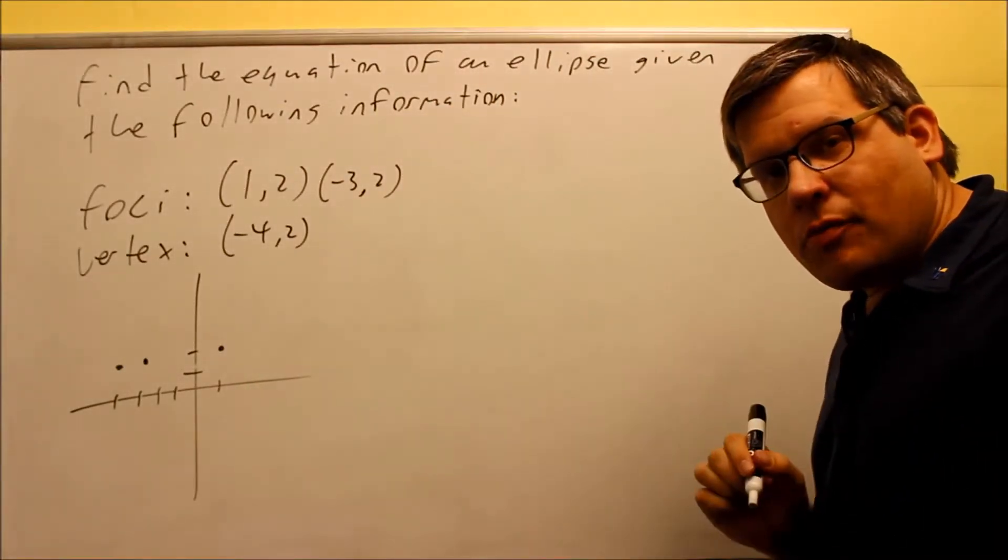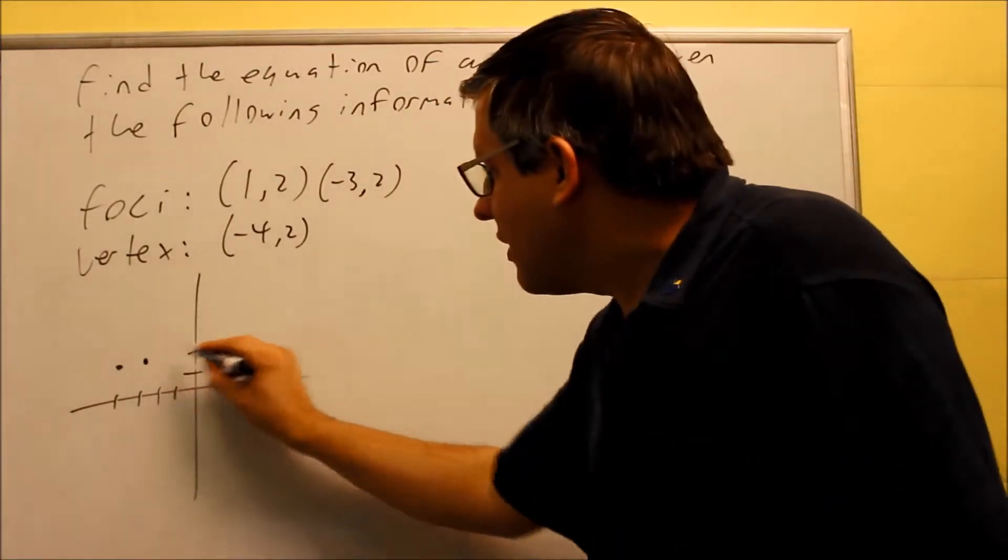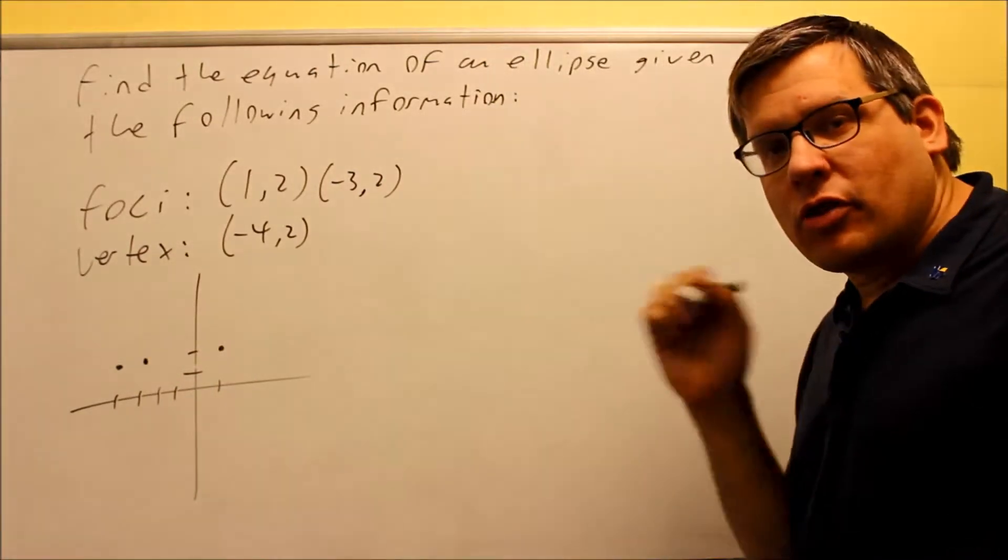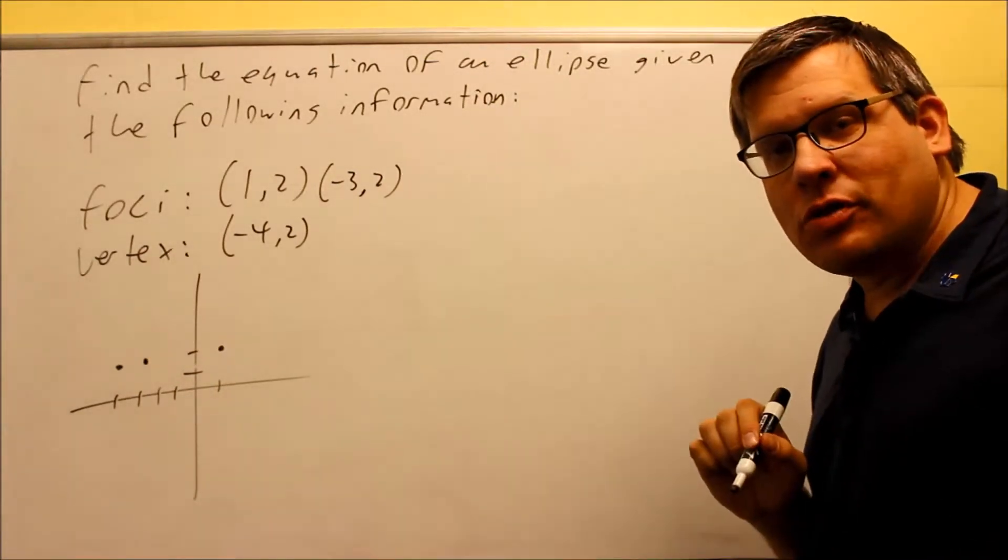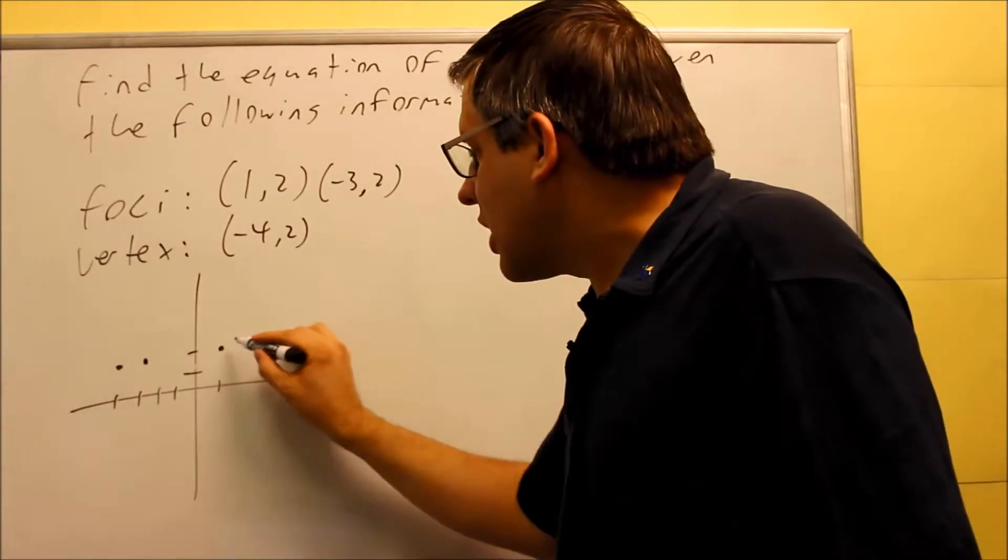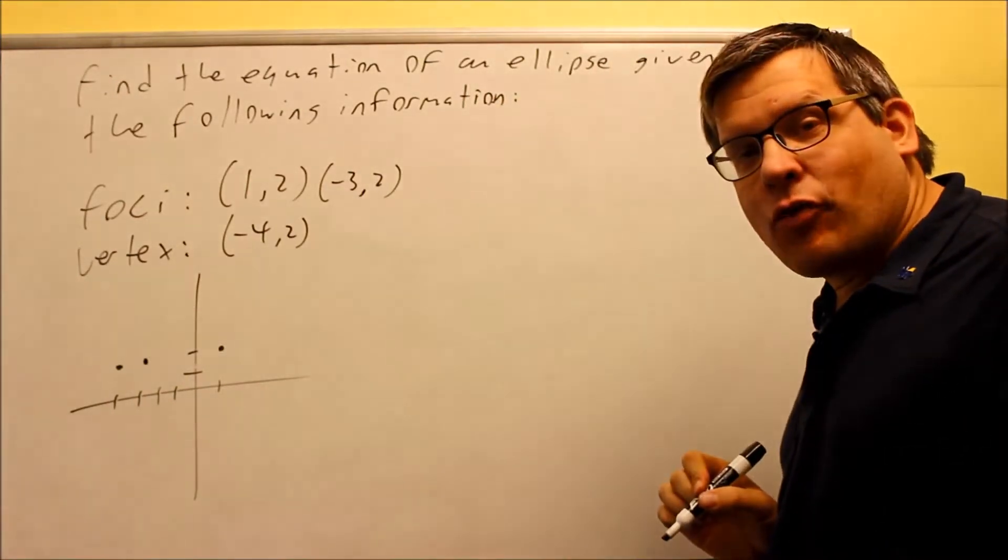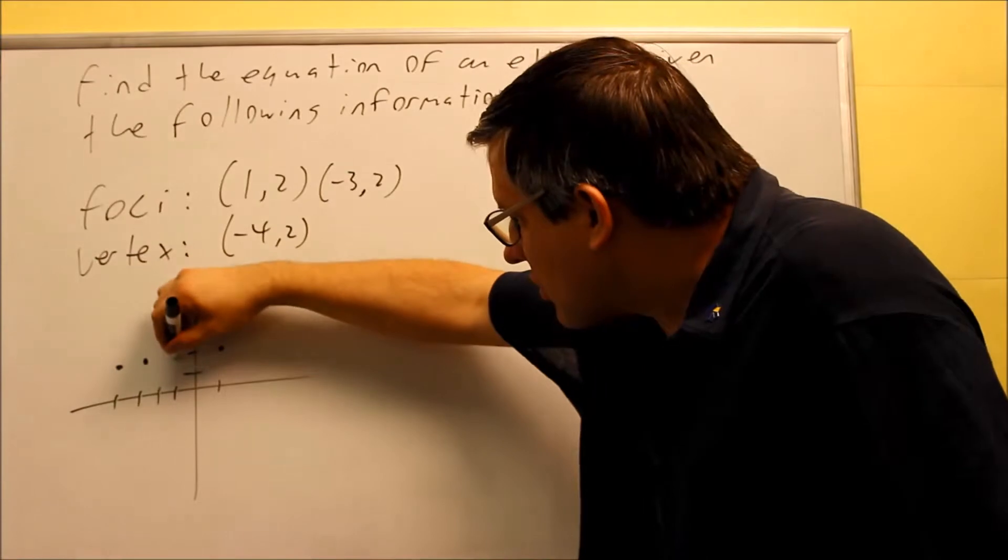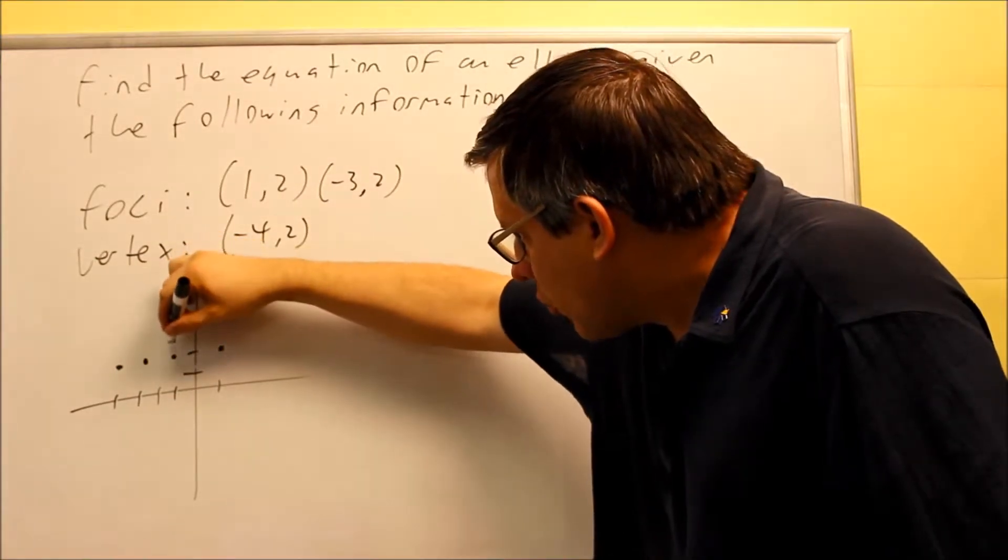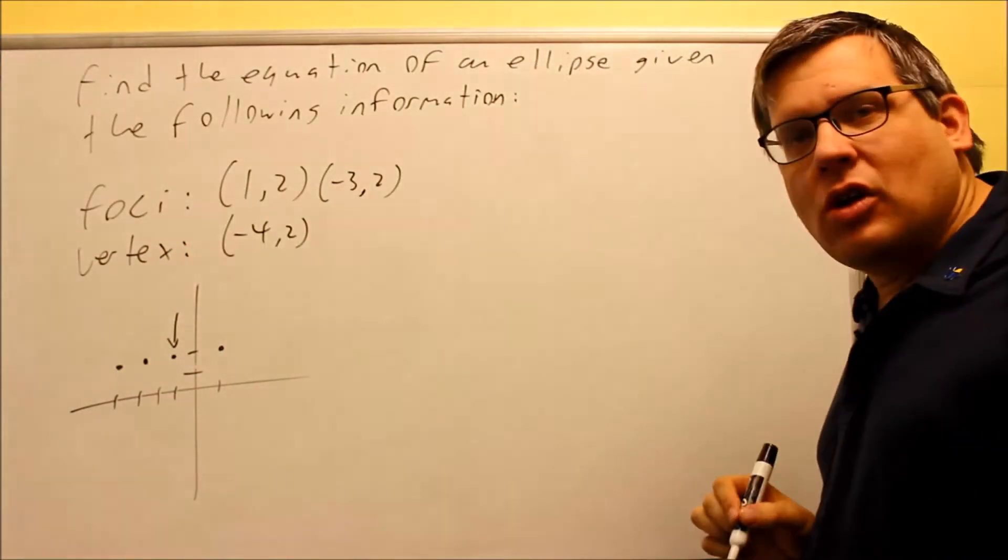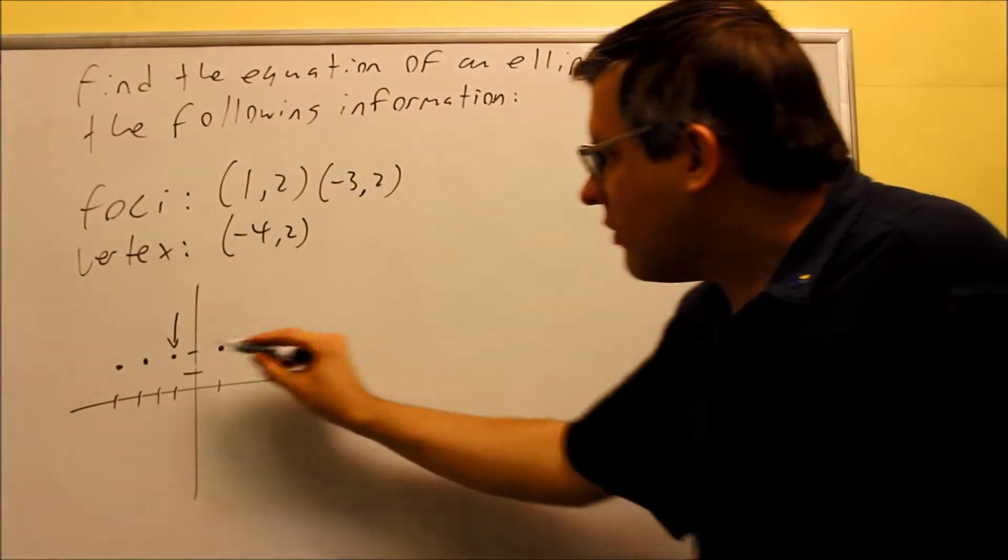Now your center is going to have to be exactly halfway between the two vertices or exactly halfway between the two foci. Now because they give us the two foci, we can find the halfway point. The halfway point, the center, is going to be right here. So I'll indicate the center with an arrow. That originally was not given to us.